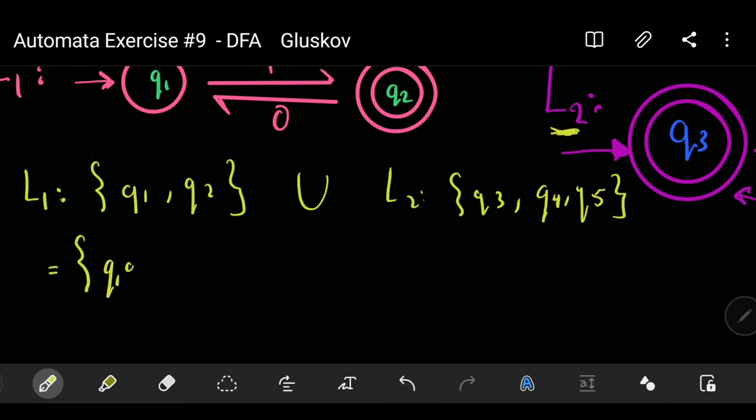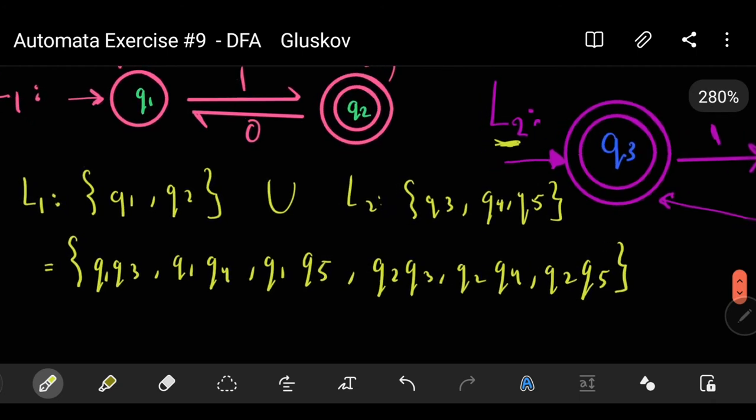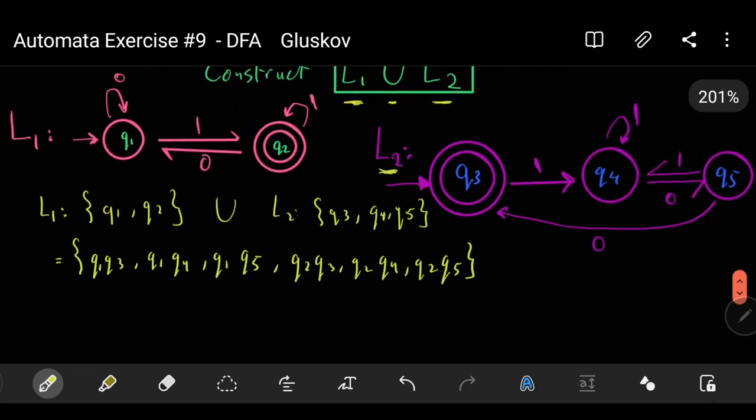Now let's make a union between these two sets. It would be equal to Q1 Q3, Q1 Q4, Q1 Q5, and Q2 Q3, Q2 Q4, Q2 Q5. These are the six states of this union.